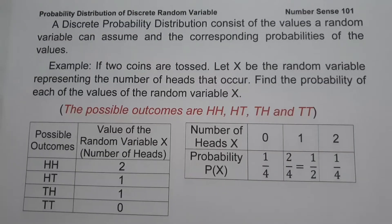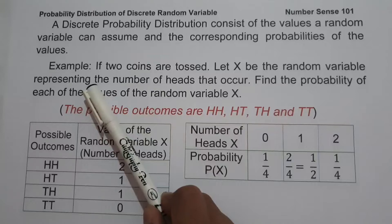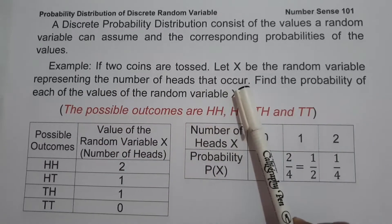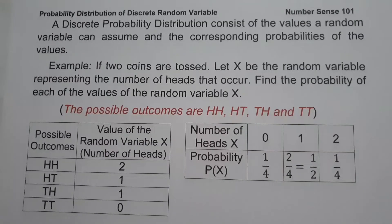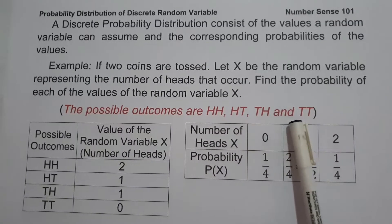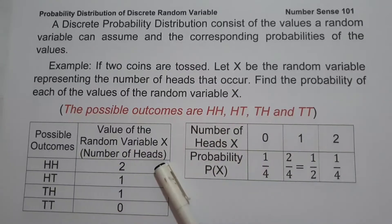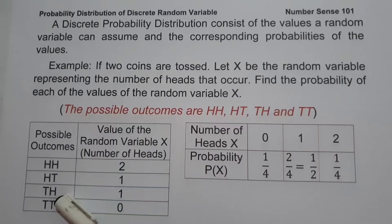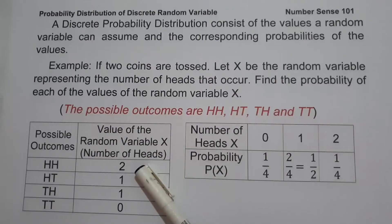So let's say for example, if two coins are tossed, let X be the random variable representing the number of heads that occur. Find the probability of each of the values of the random variable X. If two coins are tossed, the possible outcomes are head-head, head-tail, tail-head, and tail-tail. We are going to use these to complete the given table — this will be the possible outcome, and this will be the value of random variable X, which represents the number of heads.